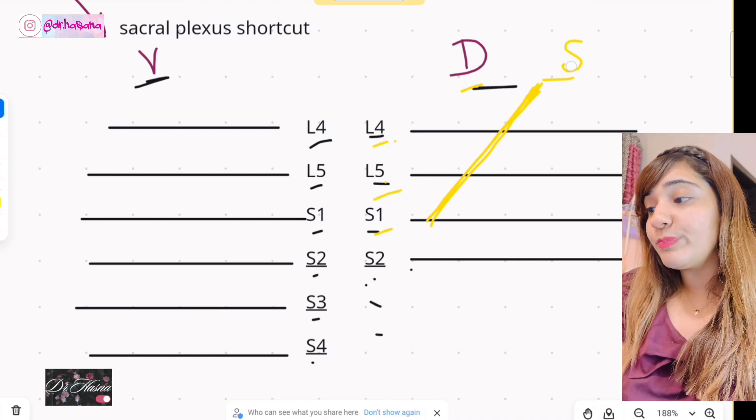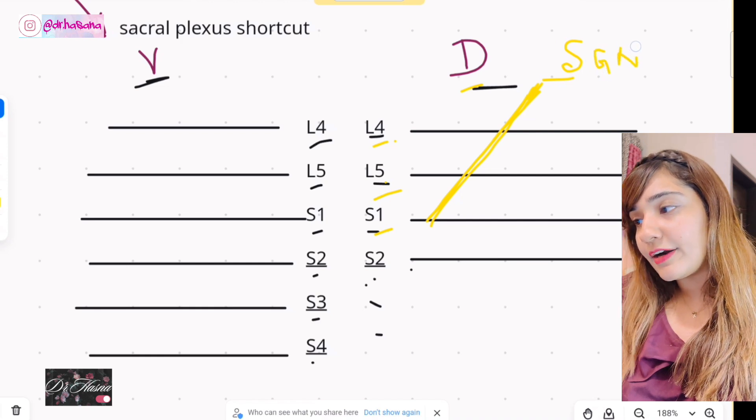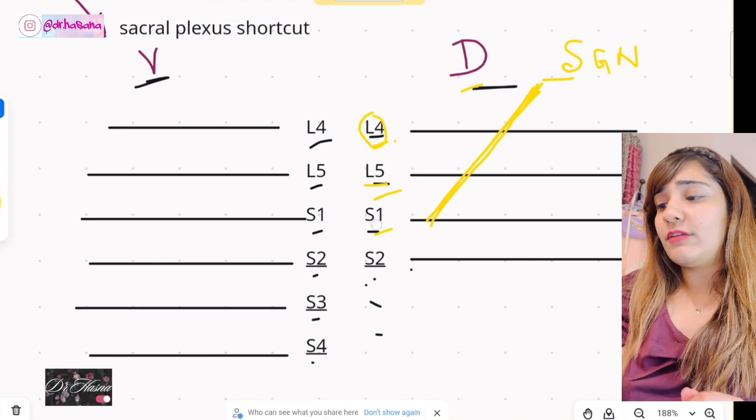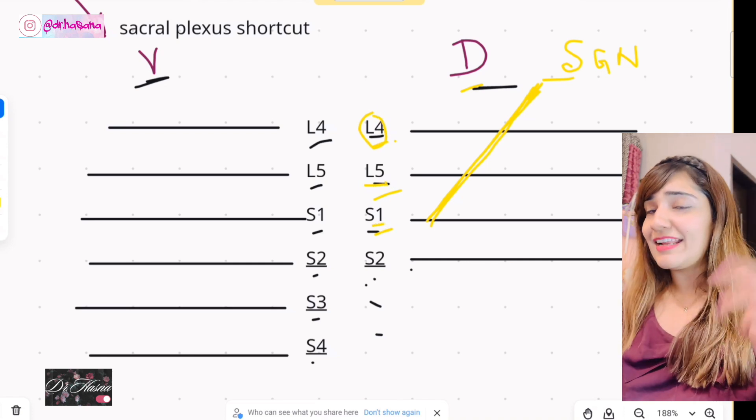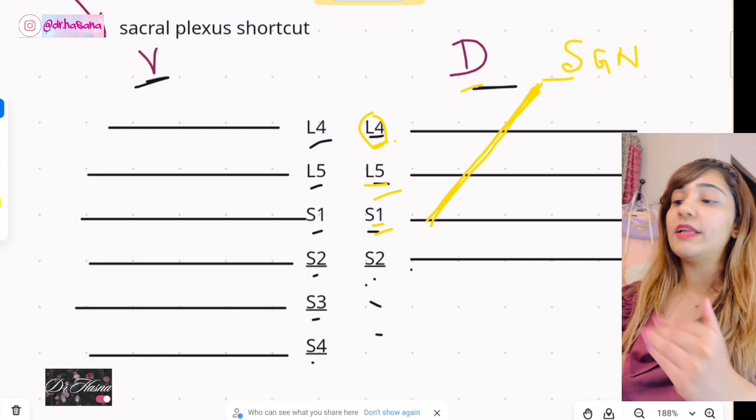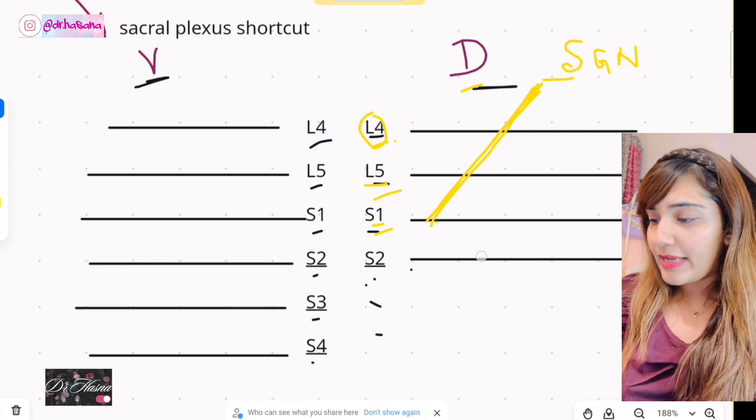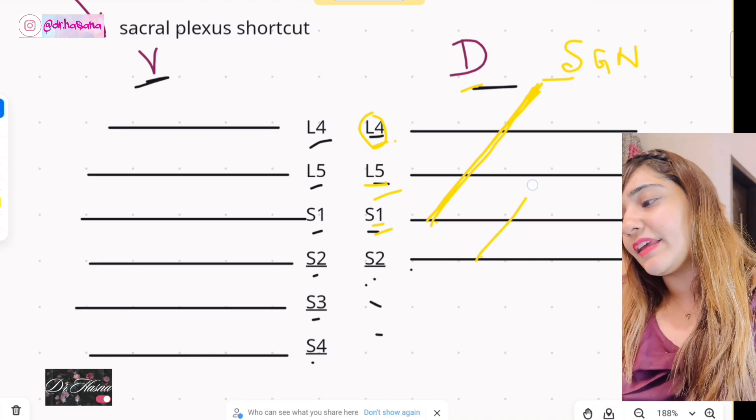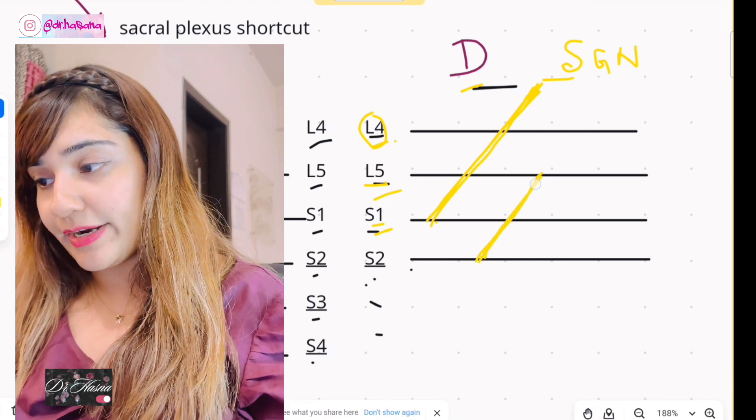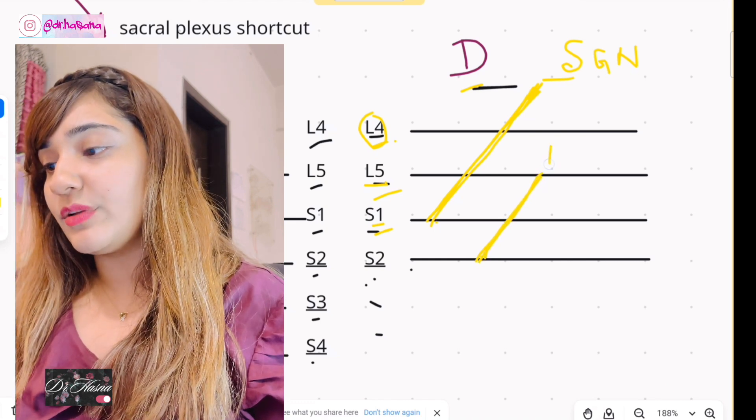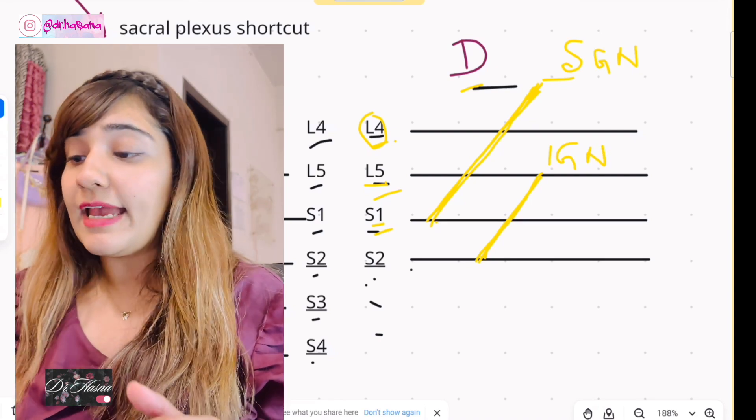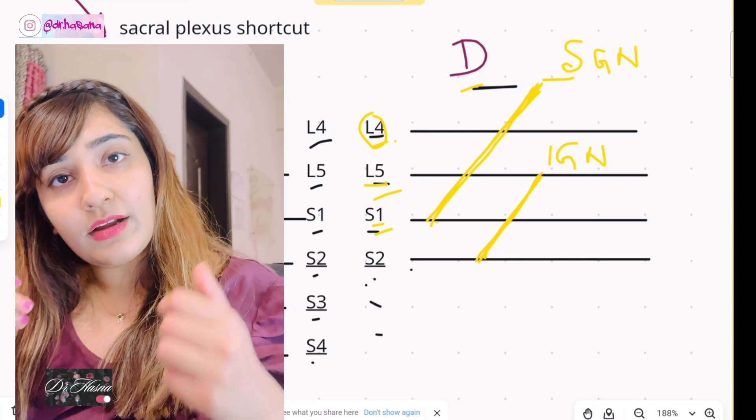Now if anyone asks you what is the root value of gluteal nerve, all you'll do is quote L4, L5, S1, how easy was that. Similarly now we're gonna weave another thread, so let's pass another thread guys. And this time we'll just go one stair down and we're gonna do the same thing with three levels of the root divisions. And once we'll take this out this will be the inferior gluteal nerve. Now if anybody asks you the value of inferior gluteal nerve you'll say L5, S1, S2.